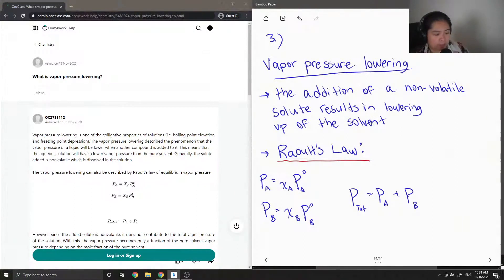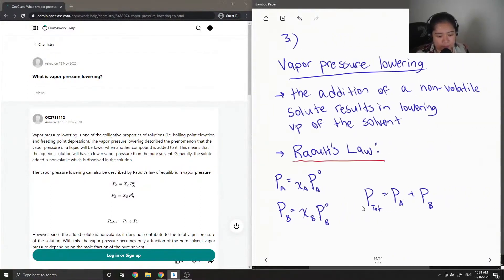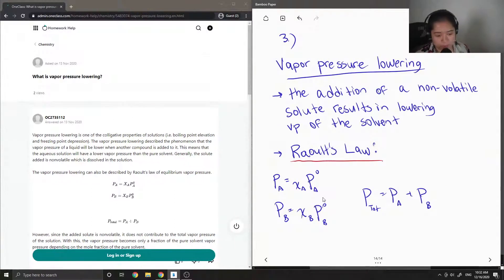And the total pressure of this system would be Pa plus Pb. So you can see how depending on how much of the other substance there is, this will affect the overall pressure, the new pressure of the solute and the solvent.